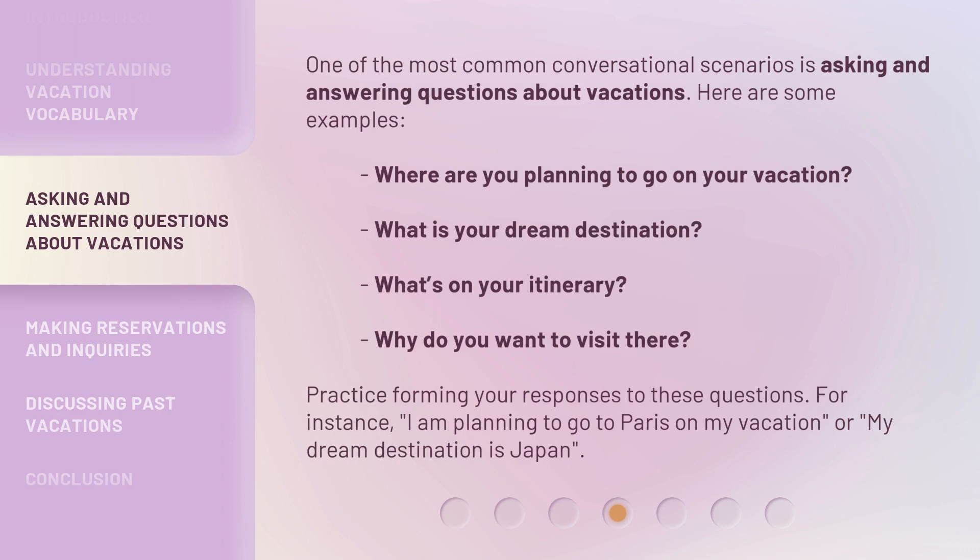One of the most common conversational scenarios is asking and answering questions about vacations. Here are some examples: Where are you planning to go on your vacation? What is your dream destination? What's on your itinerary? Why do you want to visit there? Practice forming your responses — for instance, "I am planning to go to Paris on my vacation," or "My dream destination is Japan."